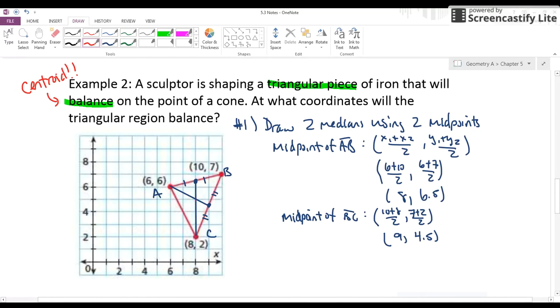And that point of intersection is going to be that centroid we're looking for. So right here, this is the centroid. My centroid is going to be at the point (8, 5). And there's my answer.